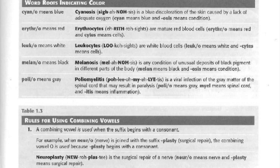There are four specific rules for using combining vowels. Rule one: a combining vowel is used when a suffix begins with a consonant. For example, the suffix -plasty means surgical repair. Since -plasty begins with a consonant, you use the combining vowel O with the word root neur/neuro, meaning nerve. So neuroplasty is your actual medical term — a word root plus a suffix.